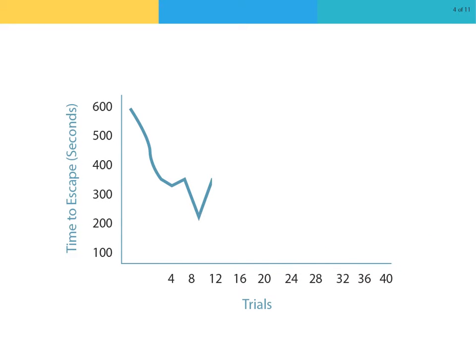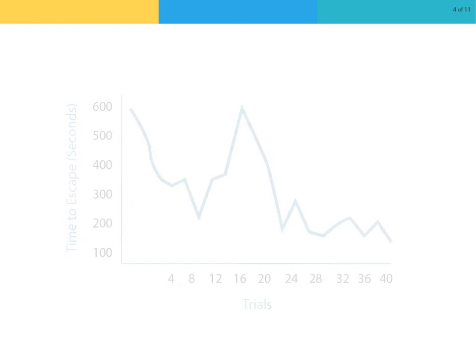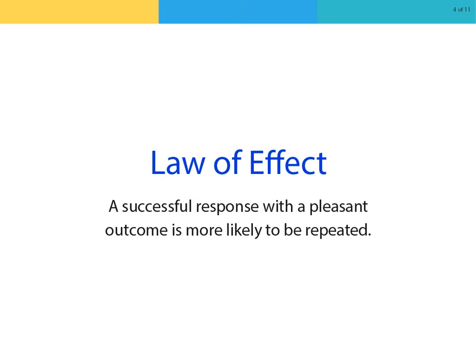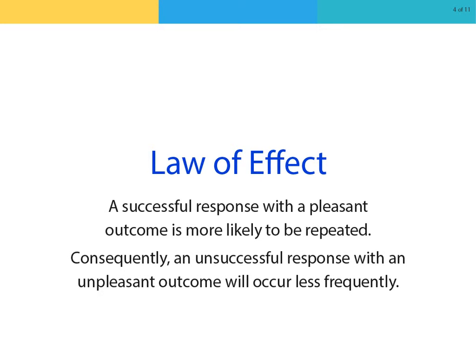From observing the changes in the cats' behavior, Thorndike developed his law of effect. The law of effect, in essence, states that a successful response with a pleasant outcome is more likely to be repeated. Consequently, an unsuccessful response with an unpleasant outcome will occur less frequently.